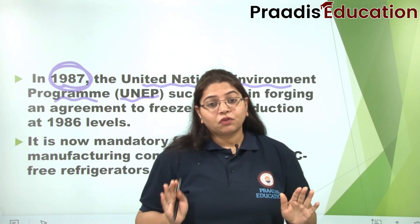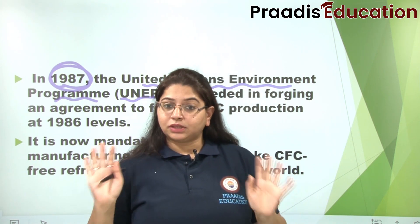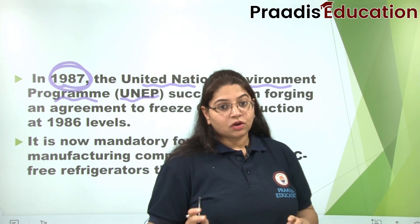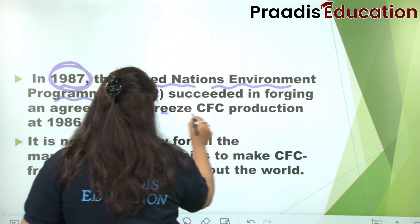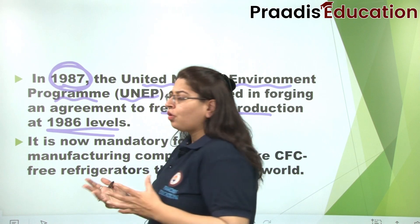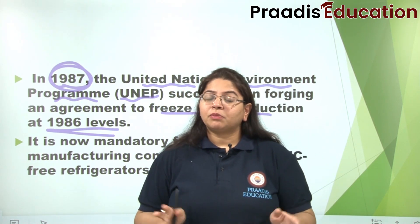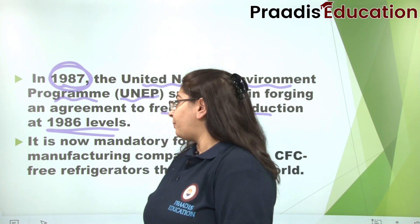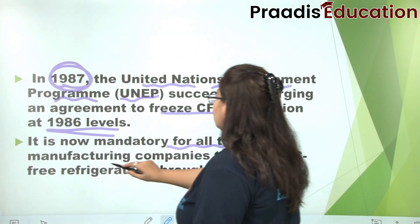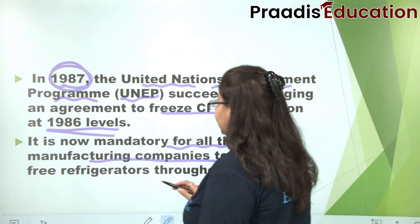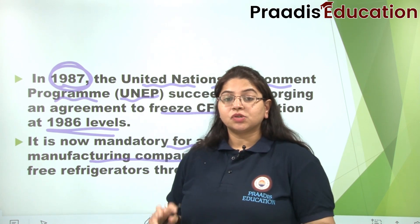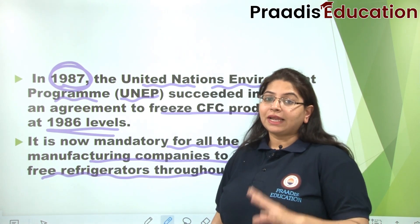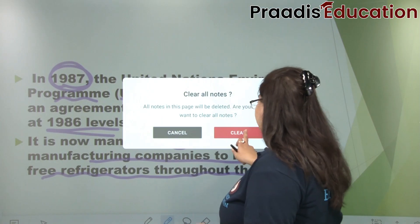Jitnay bhi chlorofluorocarbons 1986 tak pahunche, theek hai — ab 1986 ke baad further CFC content nahi badhna chahiye. Ye realize karte hue, logon ne finally is baat ko maana aur ek proper protocol, ek proper treaty sign ki ki haan, hum is cheez ka dhyaan rakhenge. Phir humne chlorofluorocarbons par ban lagaya. Aaj ki date mein yeh mandatory hai ki jo bhi companies refrigerators, ACs, extinguishers bana rahi hain, woh CFC-free cheezein banayein. Poore world ke liye applicable hai ki koi bhi CFC wali compounds nahi banayega.